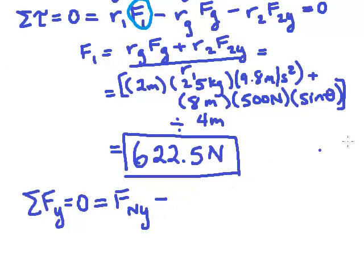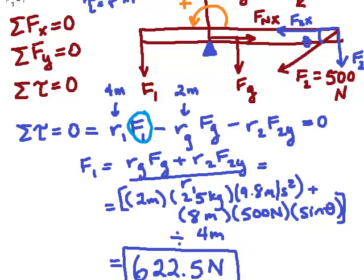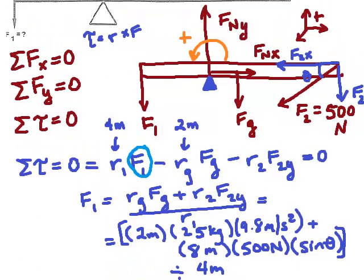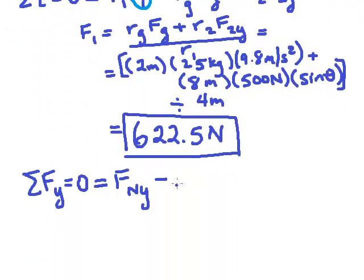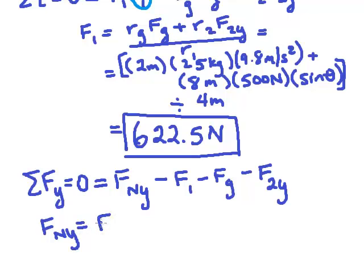So our positive force is going to be FnY, and our negative forces are F1, Fg, and F2y. So we get that FnY equals F1 plus Fg plus F2y.